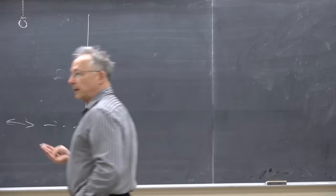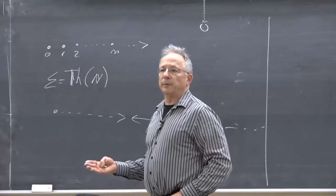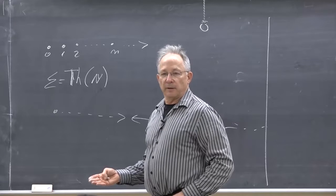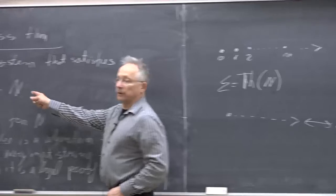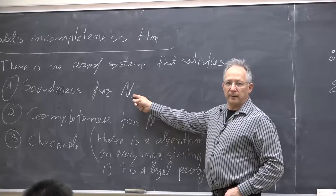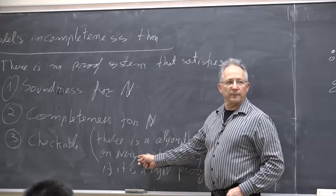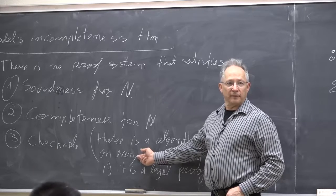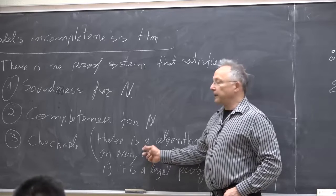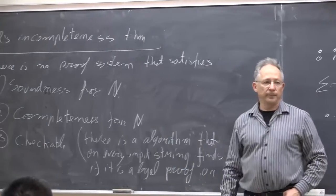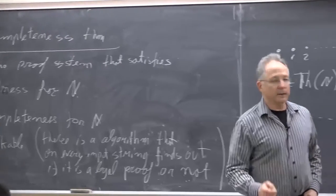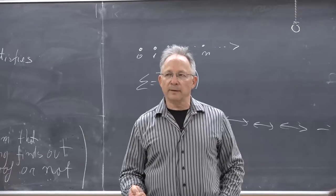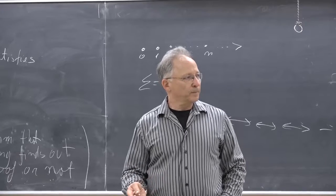This really is a revolutionary theorem in mathematics — it changed the way we think about mathematics. It tells us that if we take any notion of what is provable in mathematics, as any mathematician understands it, it probably satisfies soundness — we believe everything we prove is correct — and it's definitely checkable. If someone says 'I proved this conjecture, here is my proof,' it may take a couple of years to check, but we can check it. Therefore, any proof system we usually use for mathematics is not complete.